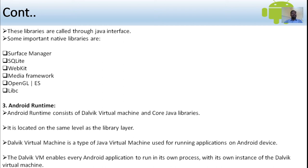The third layer is called Android Runtime. Android Runtime consists of the Dalvik virtual machine and core Java libraries, located on the same level as the library layer. The Dalvik virtual machine is a type of Java virtual machine for running applications on Android devices. It enables every Android application to run in its own process with its own instance of the Dalvik virtual machine.